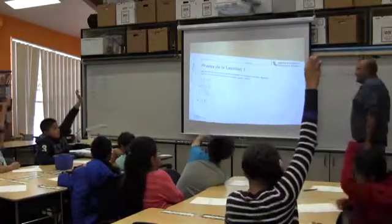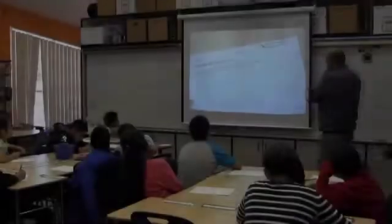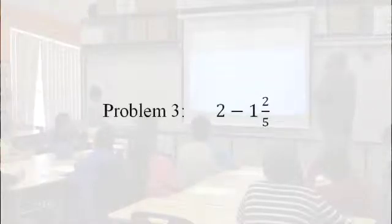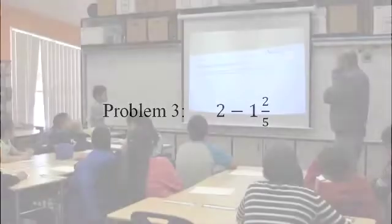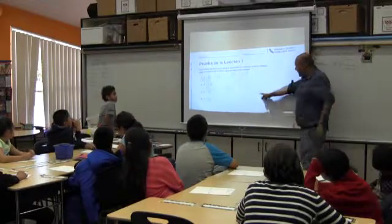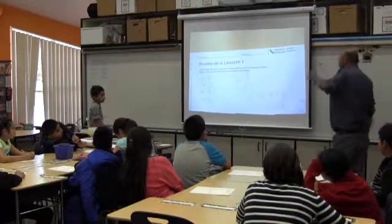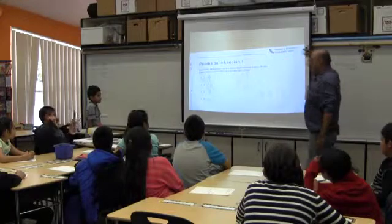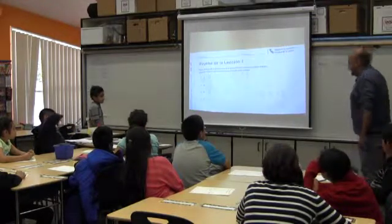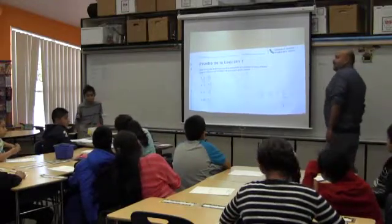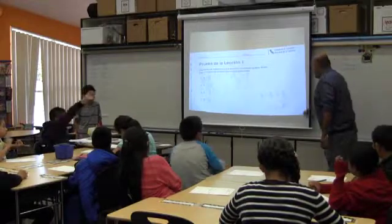Number three — Saúl, can you come do it please? Explain what you did, because you did it pretty quick. Tell me what you did. I regrouped the two and the five five-sixths one. So you regrouped it into one and five-fifths, right? You did that in your head — you didn't write it down, you skipped that step. Good. And then you just subtracted it. Did everybody get three-fifths? Yep. All right.